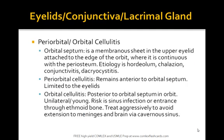A high yield topic: periorbital versus orbital cellulitis. Periorbital cellulitis is limited to the eyelids, remaining anterior to the orbital septum — a membranous sheet in the upper eyelid attached to the edge of the orbit, continuous with the periosteum. Orbital cellulitis is posterior to the septum. Unilateral young patients present with sinus infection through the ethmoid bone, and you must treat aggressively to avoid extension into the meninges and brain via the cavernous sinus.